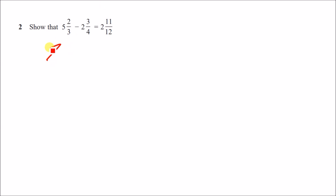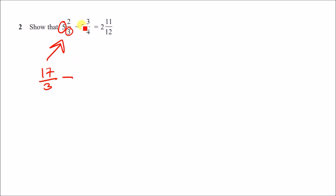For five and two-thirds, multiply the whole number by the denominator: five times three is 15, add two is 17, giving 17 over three. For the second mixed number, two times four is eight, plus three is 11, giving 11 over four.